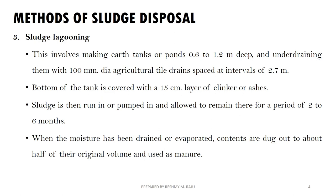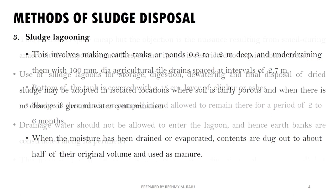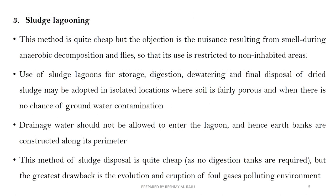We have earthen tanks of 0.6 to 1.2m deep with an under-draining system of 100mm diameter. We provide drains at intervals of 2.7m. The bottom layer consists of clinkers and ashes to form a filter layer. We pump the sludge in, and after 2 to 6 months the sludge reduces to about half its original volume.